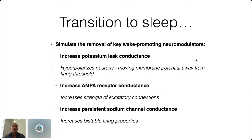To transition to sleep, we want to simulate the removal of these wake-promoting neuromodulators. For example, acetylcholine reduces conductance — it blocks the background potassium leak — so by transitioning to sleep, we increase that potassium leak conductance, resulting in a hyperpolarization of the neurons. We're also increasing the AMPA-receptor conductance because acetylcholine cuts that in half. And increasing the persistent sodium channel conductance. These key changes actually change the state of the system at the cellular and synaptic level.